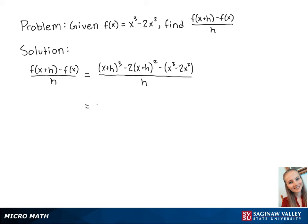If we multiply the top, we get x cubed plus 3x squared h plus 3x h squared plus h cubed minus 2x squared minus 4x h minus 2h squared minus x cubed plus 2x squared all over h.